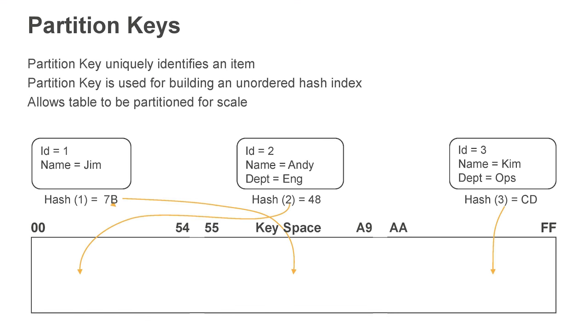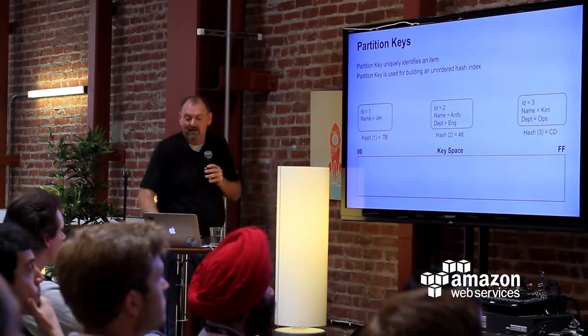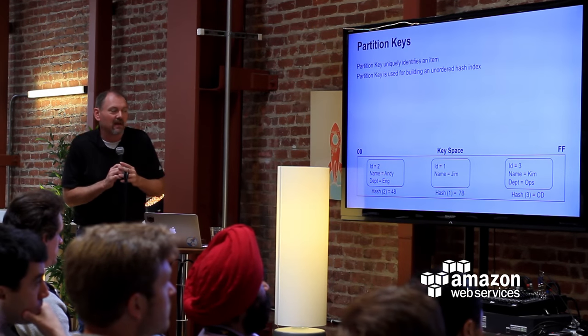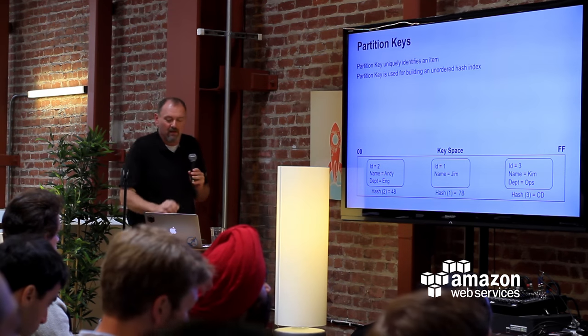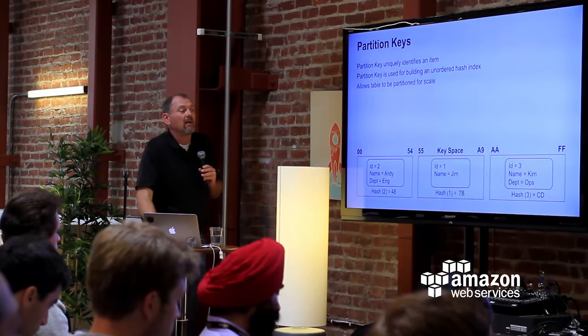We take the partition key attribute, apply a hash algorithm to generate a unique random value, and lay items out across what we call a key space. On a small table with a single server, the entire key space is served by a single storage node. If the table grows, we split that key space — this is how all NoSQL databases work. They apply a hash or use the straight value, sort records across a key space, then as you scale, chunk the key space and hand it to different nodes. This is what gives NoSQL the ability to scale horizontally.